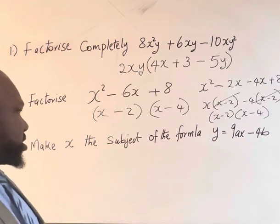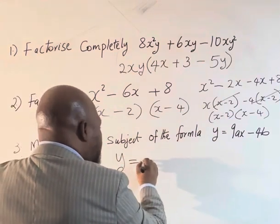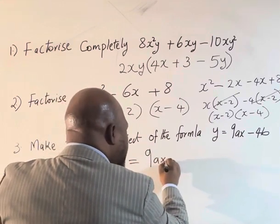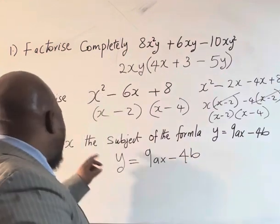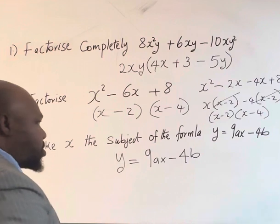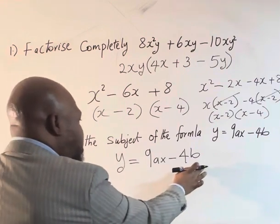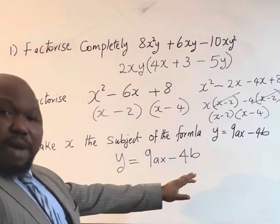The last one is change of subject formula. What we have is y equals nine a x minus four b. We are asked to make s the subject of this equation. Now the thing we need to do is first of all you remove minus four b from both sides.